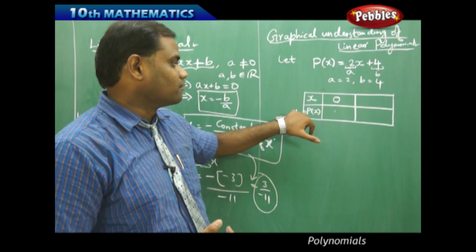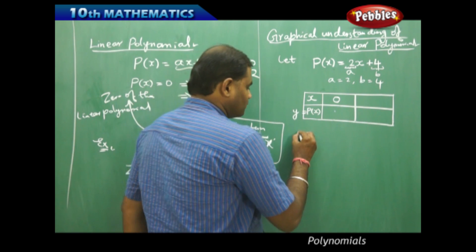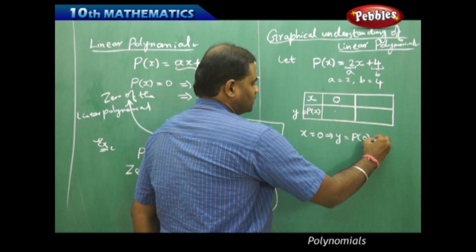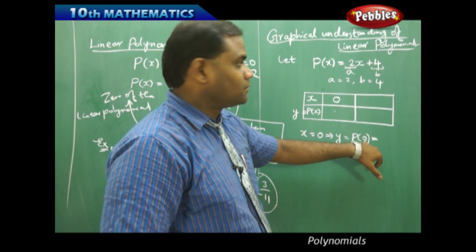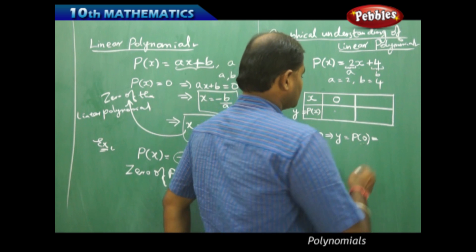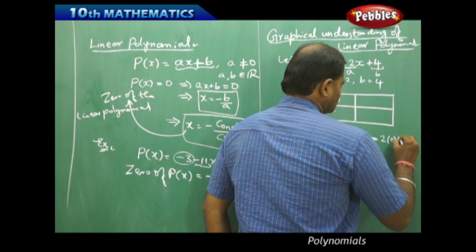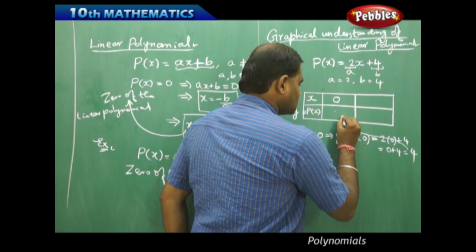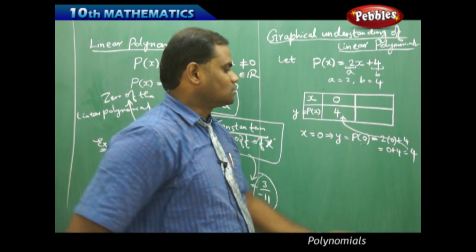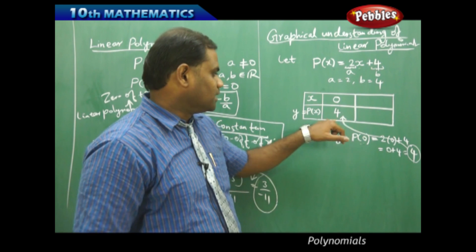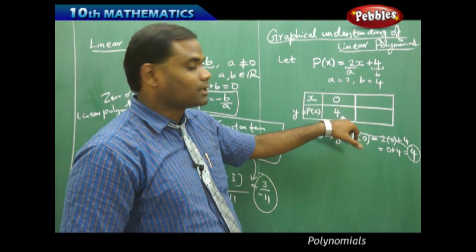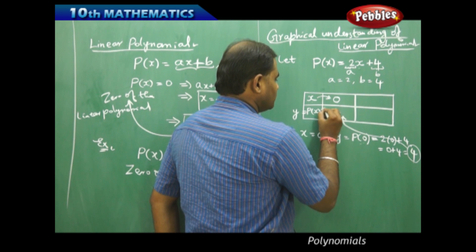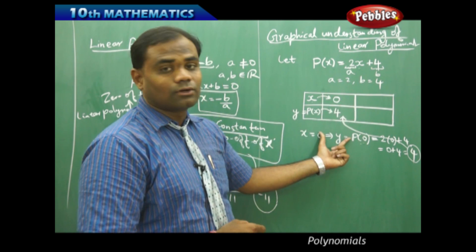When x is 0, y equals P of 0, which is 2 times 0 plus 4, giving 0 plus 4, which equals 4. So this value fills in the table: when x is 0, the value of y is 4. That is how I understand the second column of the table.